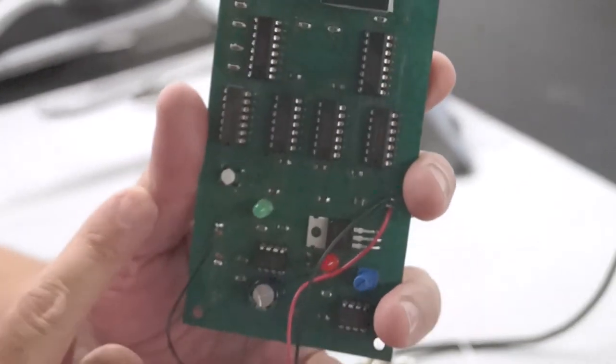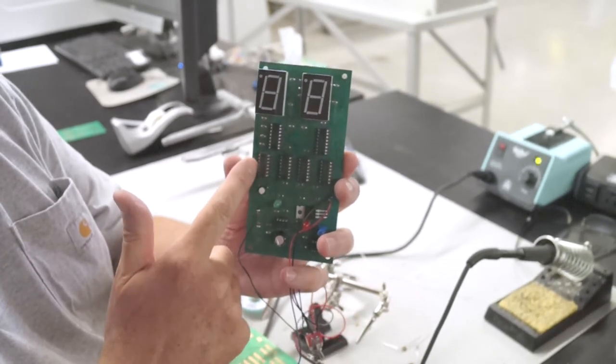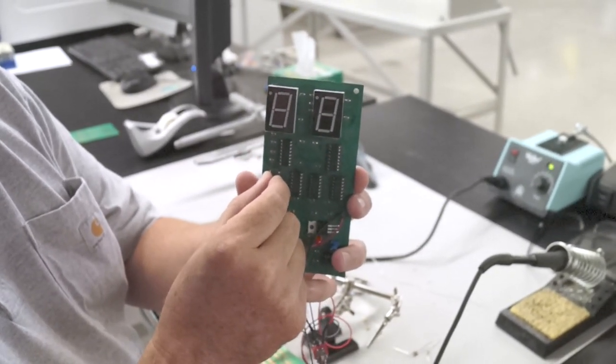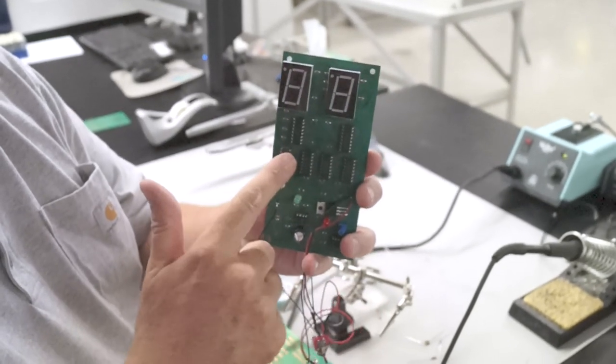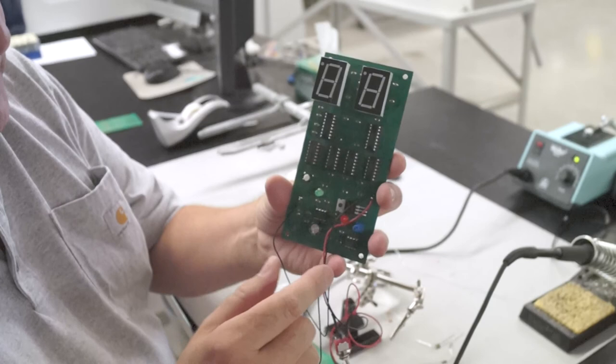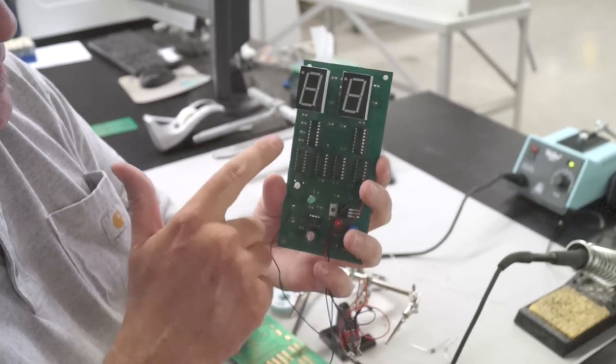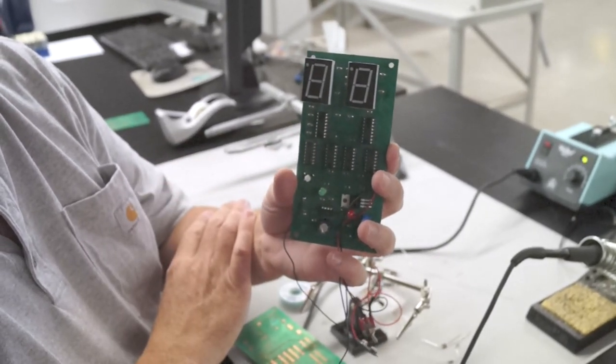I always suggest if you're going to do through-hole parts that you might want to always use integrated circuit sockets. That way, if your integrated circuit goes bad or something, you can pull it out and remove it. Plus, when you're soldering, you're not applying heat into the actual integrated circuit. So there's kind of an example of our completed board with both surface mount parts and through-hole parts located on the board.